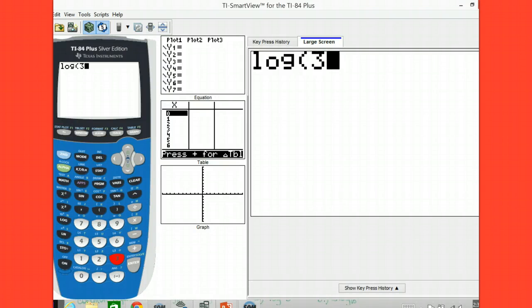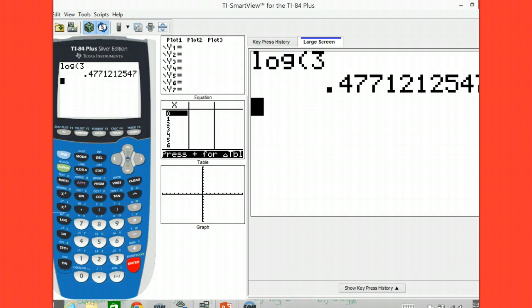Alright, so let's throw log 3 into your calculator. This is your common log button over here. It just says log on it. So we can do the log of 3 and we round our answer to maybe 3 decimal places, so .477.